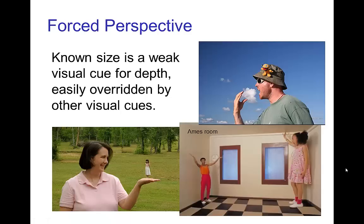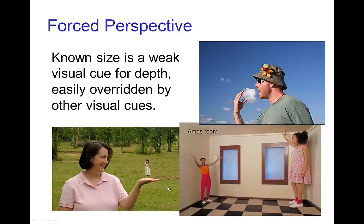Some visual cues for depth and distance are stronger than others. The depth cue of known size is sometimes overridden in forced perspective. In this photo, we realize that this is not a tiny girl sitting on the woman's hand — the girl is actually in the background and the woman is in the foreground, positioned to make it appear as if the little girl is standing on her hand. And yet our brain can't help but imagine that it really is a tiny girl.